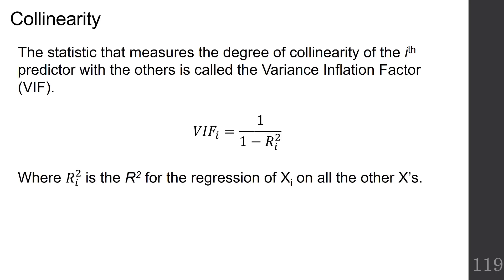So how do we evaluate for collinearity? We've got one measure of the degree of collinearity in the VIF, or variance inflation factor. The VIF is calculated according to this formula. It's 1 over 1 minus ri squared, so r squared sub i. What's r squared sub i? That is the r squared for the regression of xi on all the other x's.